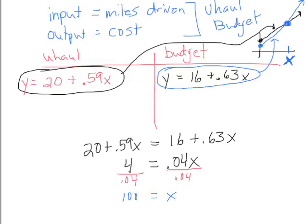So that means at 100 miles the two companies are going to cost the same and we could actually check that out if we wanted to. We could say what is 20 plus 0.59 times 100 and we would get an answer of 79, or if I did what is 16 plus 0.63 times 100 and to that I also get 79. So at 100 miles they cost 79 for both companies, which means if he's going to be driving less than 100 miles he should choose budget.